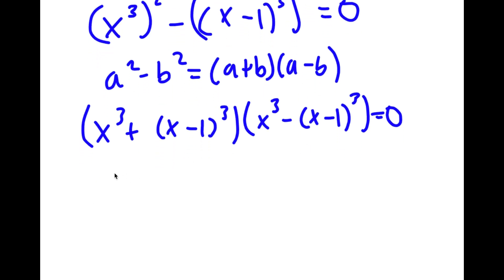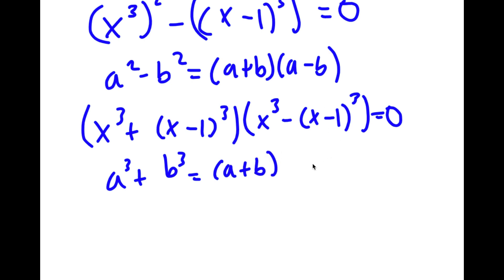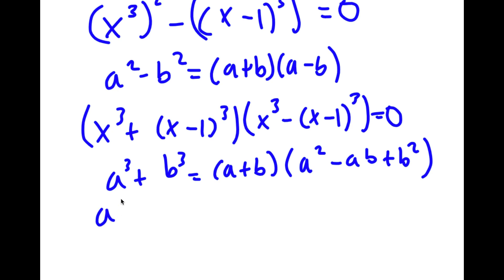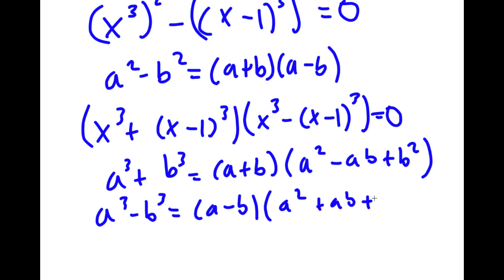Now if I have something in the form a to the power of 3 plus b to the power of 3, this is equal to a plus b times a squared minus ab plus b squared. And a to the power of 3 minus b to the power of 3 is equal to a minus b times a squared plus ab plus b squared.